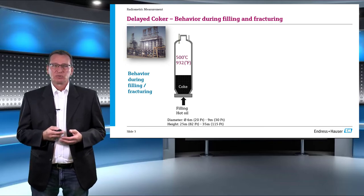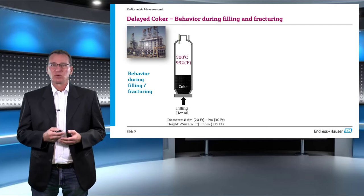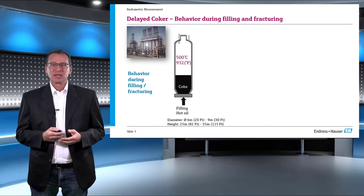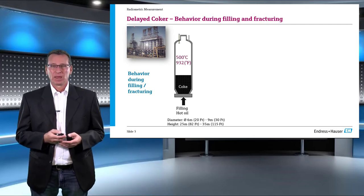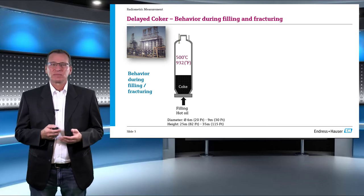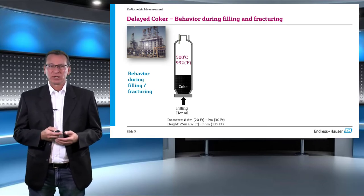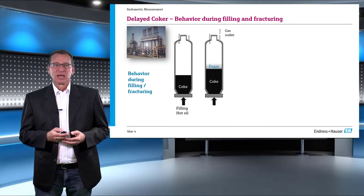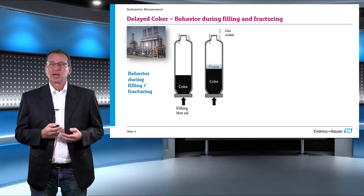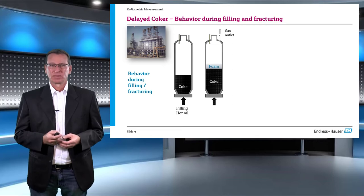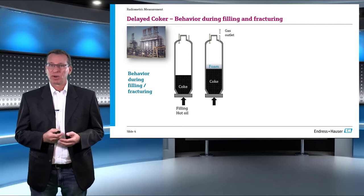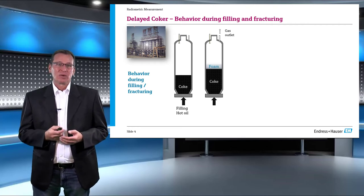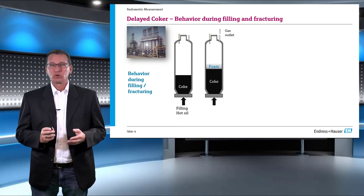It is filled with residual oil from the atmospheric and vacuum distillation unit of the refinery and maintained at a temperature of around 500 degrees Celsius (932 degrees Fahrenheit). The oil is allowed to reside in the drum anywhere between 16 to 20 hours. The high temperature and long residence time makes the oil crack thermally, leading to the formation of hydrocarbon vapors. The hydrocarbon vapors escape through the gas vent located on the top of the drum. While escaping, the vapor leads to the formation of foam on the surface of the coker.